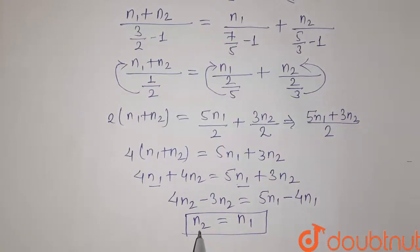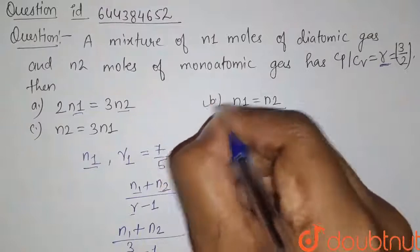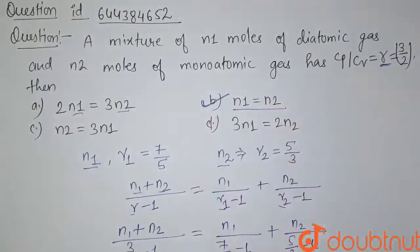So this is the relation between N1 and N2. Now let us see the options. Option B is N1 equals N2, so it will be our correct answer for this question. Thank you.